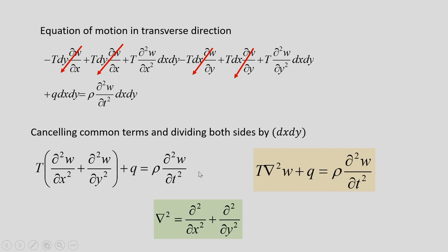This is the differential equation of motion of the membrane in the transverse direction, subjected to external load q. This can be written as T∇²W + q = ρ·(∂²W/∂t²), where ∇² is the Laplacian operator in the Cartesian system. If q is zero then motion is under the influence of initial conditions. The equation of motion is obtained by Newton's law.